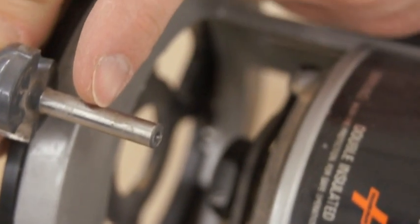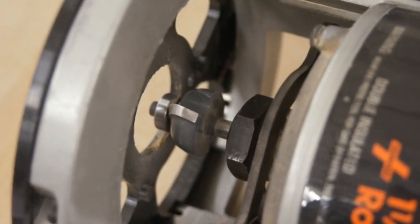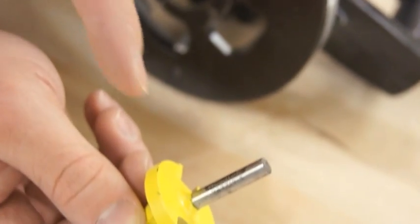Always be sure the bit is mounted in the collet to a depth of at least one half of an inch. Ideally, it should be inserted the full depth and then pulled out one sixteenth of an inch to avoid clamping on the tapered part of the bit.